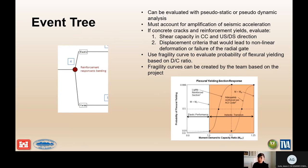You have to look at whether your reinforcement yields in both directions and then decide where that takes you within your event tree. There is an example fragility curve in the best practices documentation that uses the moment-demand-to-capacity ratio to establish a probability of flexural yielding, both for lightly reinforced sections and for adequately reinforced concrete sections. This can be used as a starting point and can be modified by the team if you have differing conditions at your site.